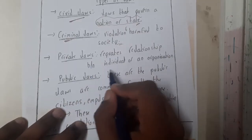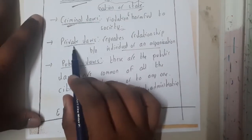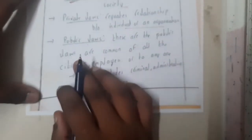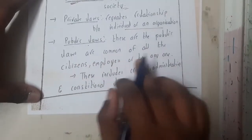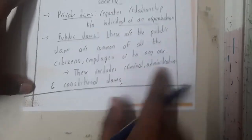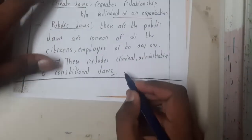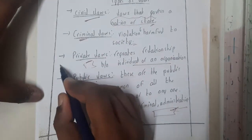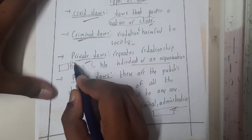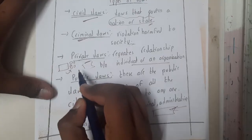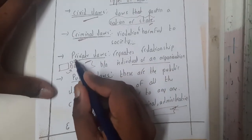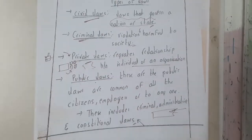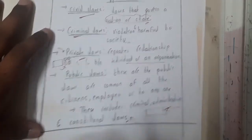Private laws regulate the relationship between individuals within an organization. Public laws are common to all citizens, employees, or anyone — they include all types of laws. In simple words, public laws are meant for everyone, whereas private laws are meant for a specific group. For example, in an apartment, if a parking slot number is assigned to you, you must park there — that is a private rule. In a public parking area, you can park anywhere — that is a public law.